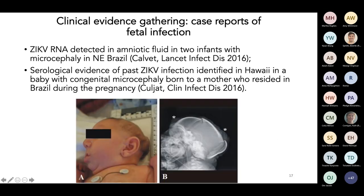What about clinical evidence gathering? You start having case reports of fetal infection, where you have the clinical manifestations and can prove microbiologically that the Zika virus was present. The association gets increasingly stronger — Zika virus RNA was detected in the amniotic fluid of two children with microcephaly. Then serological evidence of past Zika infection: antibodies were identified in Hawaii in a baby with congenital microcephaly born to a mother who had been in Brazil during pregnancy.